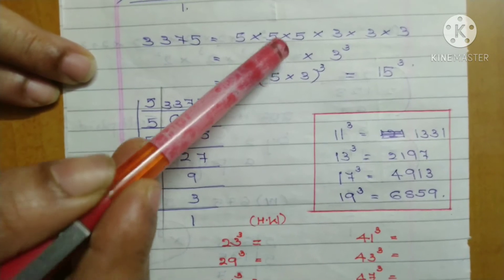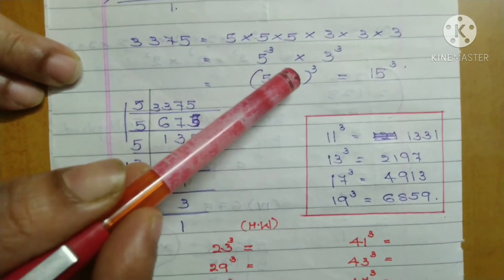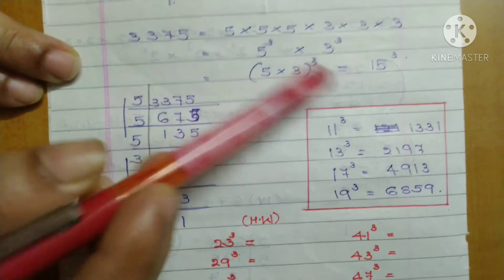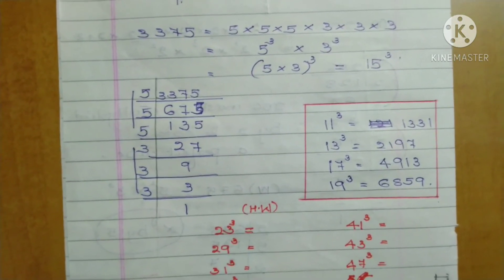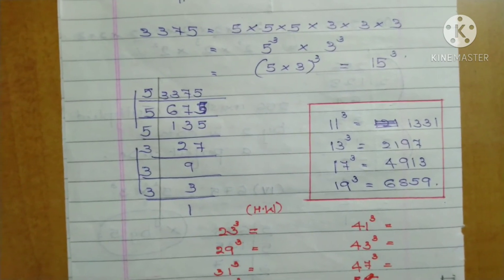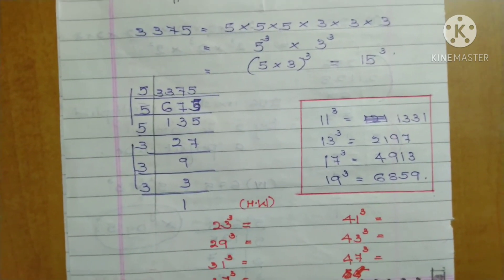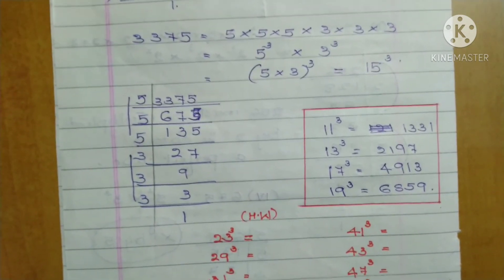So 5³ × 3³ equals (5 × 3)³. 5 times 3 is 15. So 3375 is the cube of 15. 15³ = 3375.